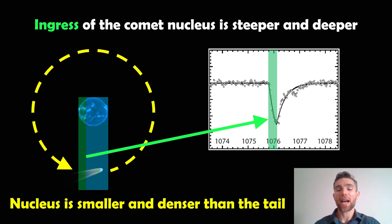So why is it actually asymmetric? Well here I've denoted the ingress, which is where the comet actually starts to pass in front of the star. And this is the nucleus or the denser part. It would be the brighter part, but because it's in front of the star, it's denser, it's smaller. So what happens here is you get a steeper and deeper transit. So it blocks out light quite quickly and then it blocks out quite a lot of light. It's quite deep because it's optically thick. You can't see through the nucleus.